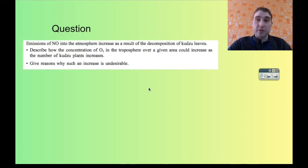And then the oxygen radical reacting with oxygen gas to form the ozone. Because it says the word increase, you'd want to say the increase in the number of kudzu plants would lead to an increased concentration of nitric oxide, which eventually leads to increased concentration in ozone.